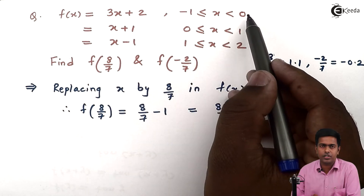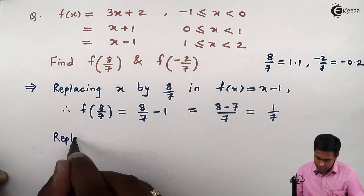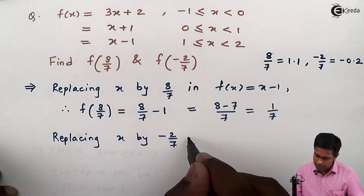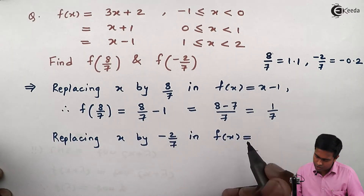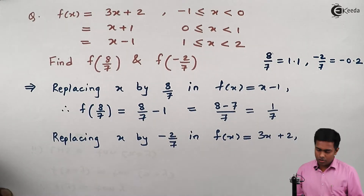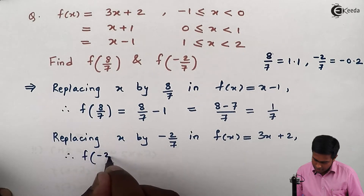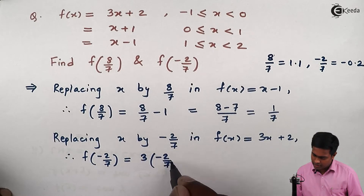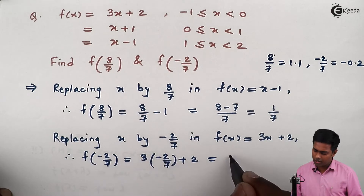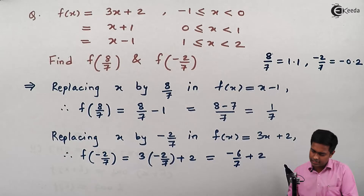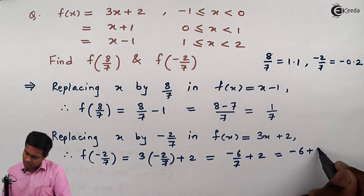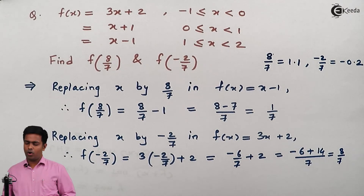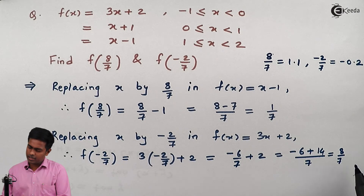Replacing x by minus 2 by 7 in f of x equal to 3x plus 2, this will become 3 times minus 2 by 7 plus 2, which gives minus 6 upon 7 plus 2. Taking the LCM, we get minus 6 plus 14 upon 7, which is nothing but 8 upon 7. So the value of f of minus 2 by 7 is 8 upon 7.